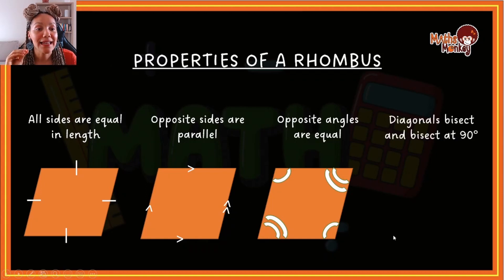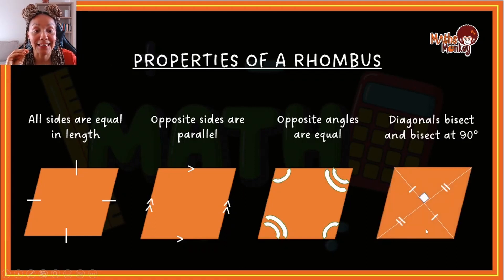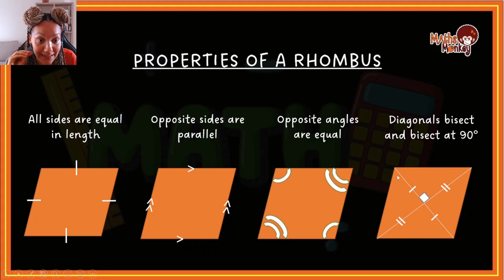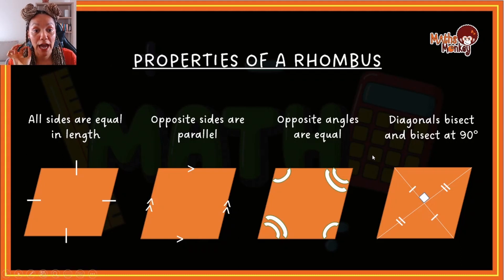Then, diagonals bisect and bisect at 90 degrees. In a rhombus, the diagonals are not equal to each other, but each diagonal does cut the other one in half. And again, all of the angles in the center where the diagonals intersect are 90 degrees. So those are the properties of a rhombus.